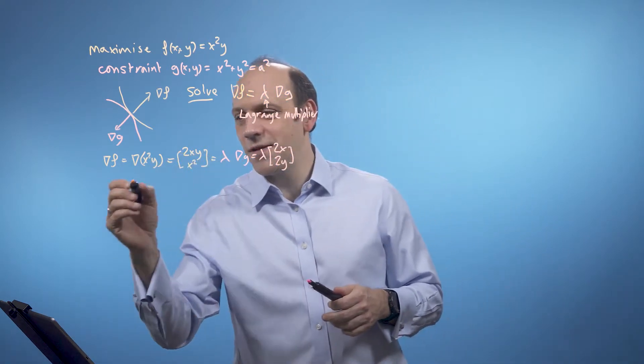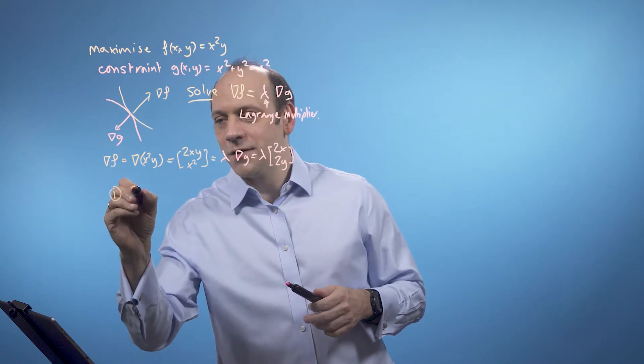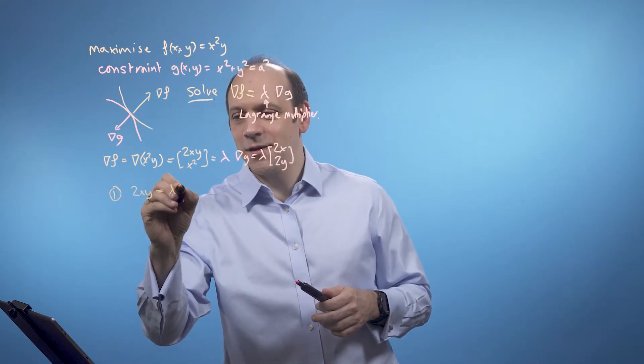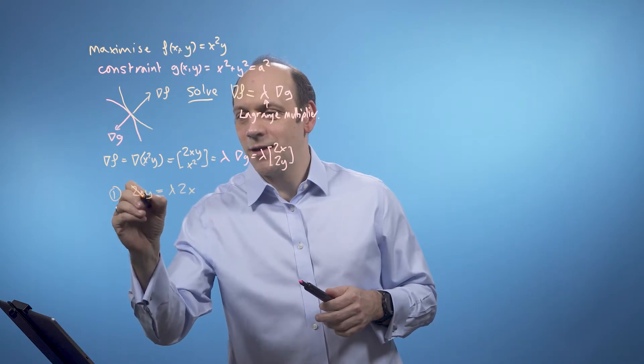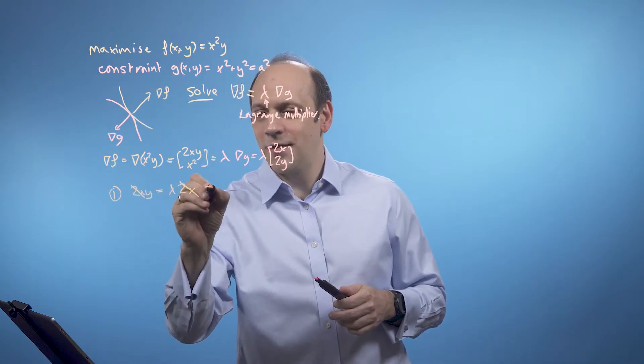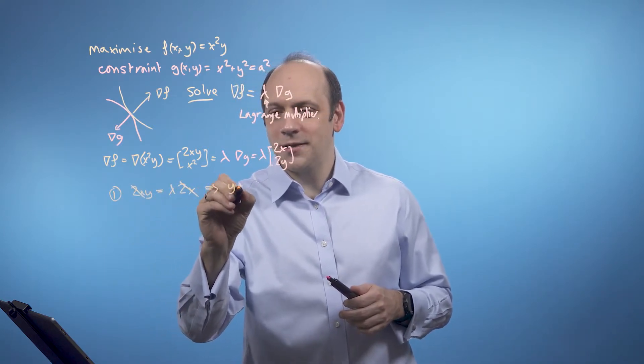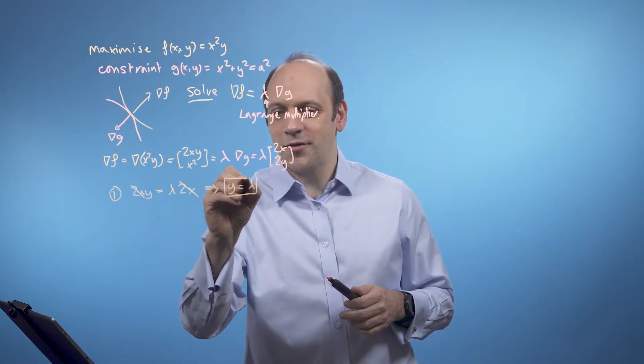So if I take the first line, I've got 2xy is equal to lambda times 2x. I cancel the 2x's and therefore I've got y is equal to lambda, straight out.